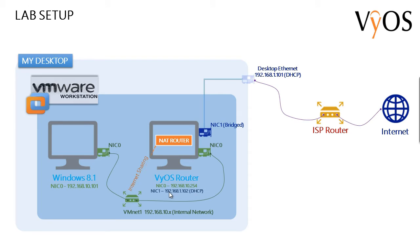NIC 1 will be bridged to the physical ethernet adapter of my desktop. The physical NIC of my desktop is connected to my ISP router which is connected to the internet. My ISP router will lease DHCP IP addresses in the 192.168.1.x subnet to my desktop NIC as well as NIC 1 of the VyOS router. Then we will configure VyOS as a NAT router to share the internet to any virtual machines connected to VMNET 1.